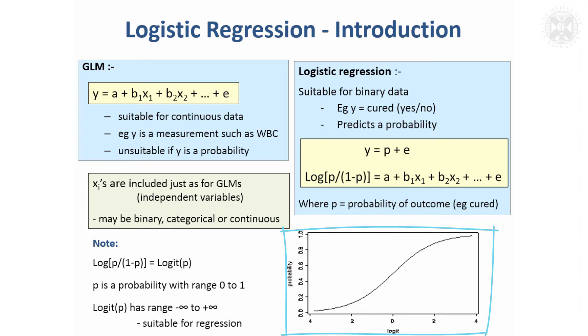And this graph just illustrates how this value here, which is sometimes called a logit, has a range - it's got a linear range, it can go from minus infinity really up to plus infinity. But if you back transform that value to get the probability, it's always going to have a range of 0 to 1, which is exactly what we want for a probability.